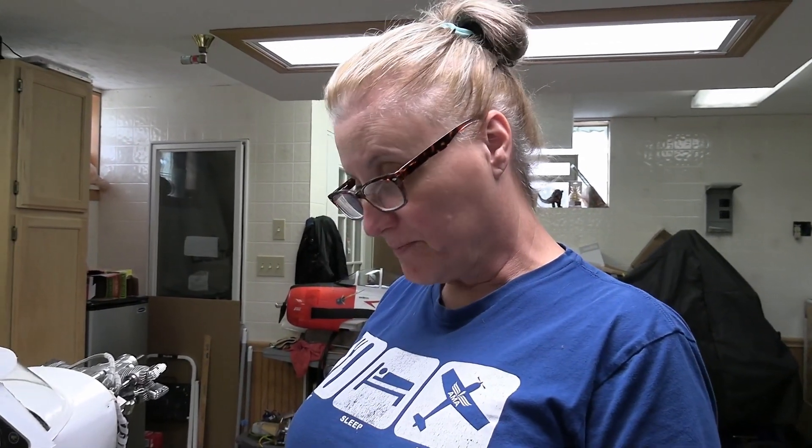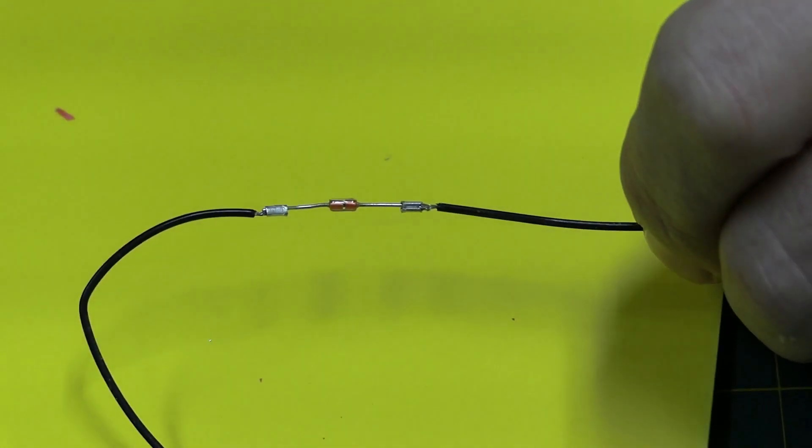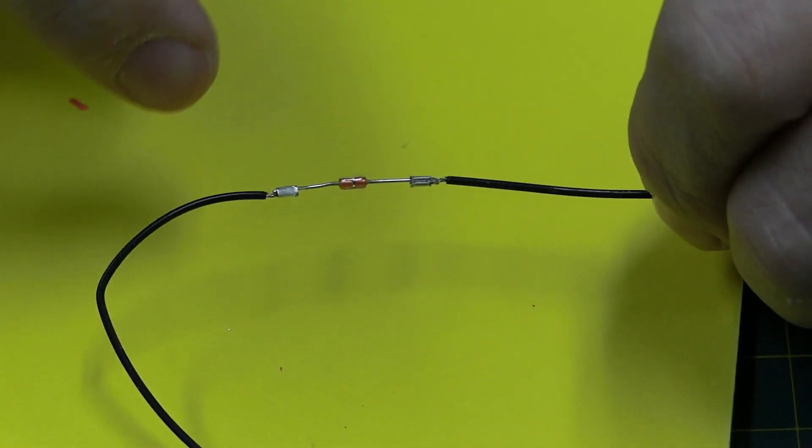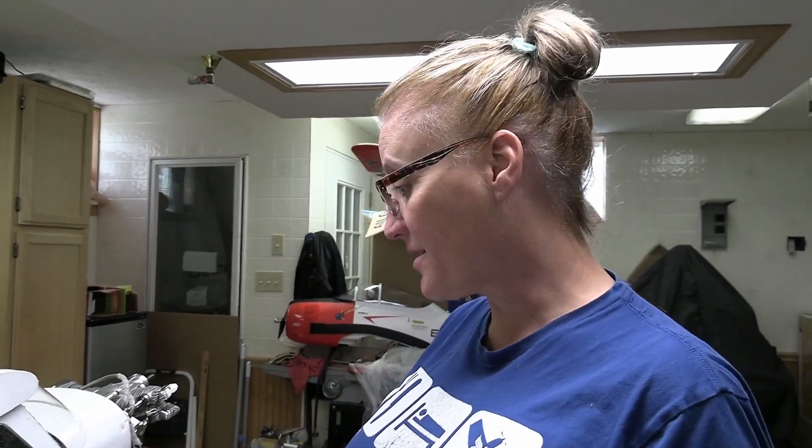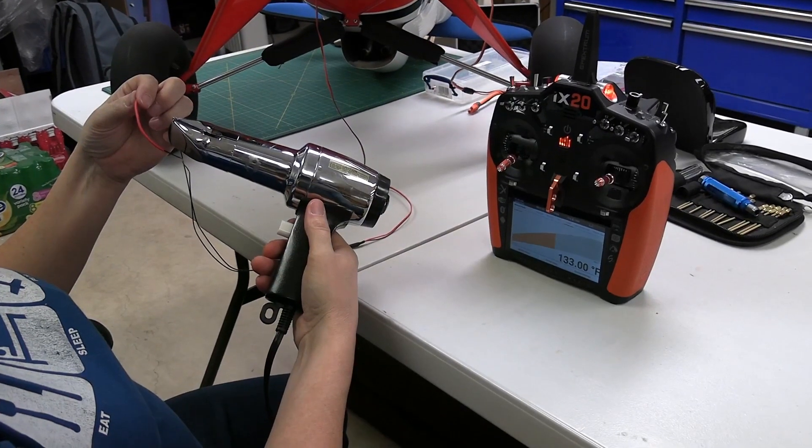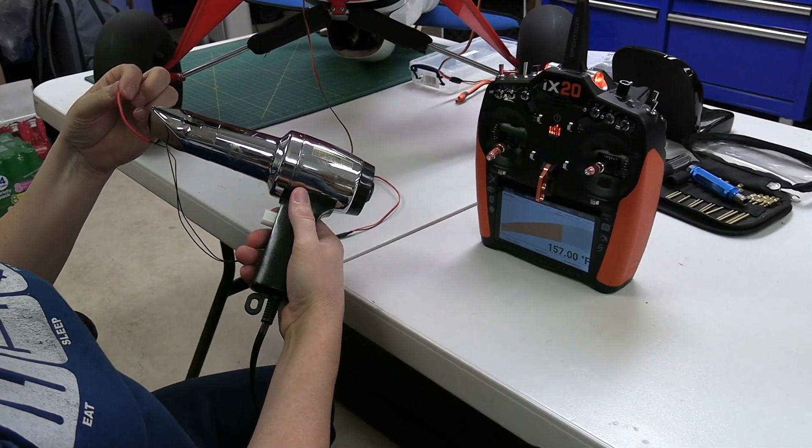We actually took the shrink tube off to see what was underneath there, and it is a thermistor. The way the thermistor works is that it's picking up voltage. The receiver is sending out voltage through the sensor port, and it takes a measurement based on the resistance of the thermistor, which has different materials in there that will react when heat is applied.